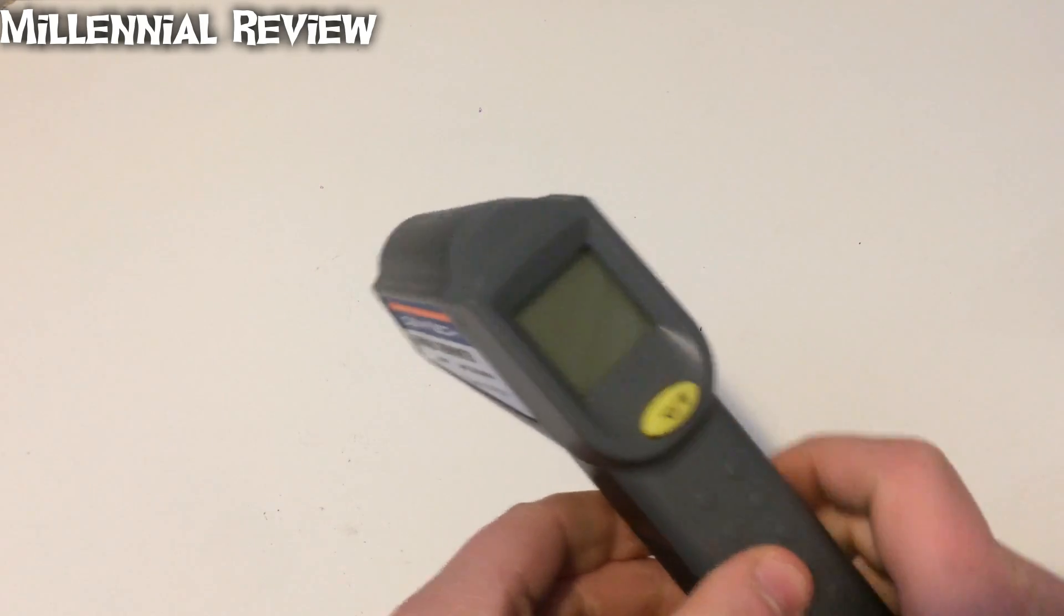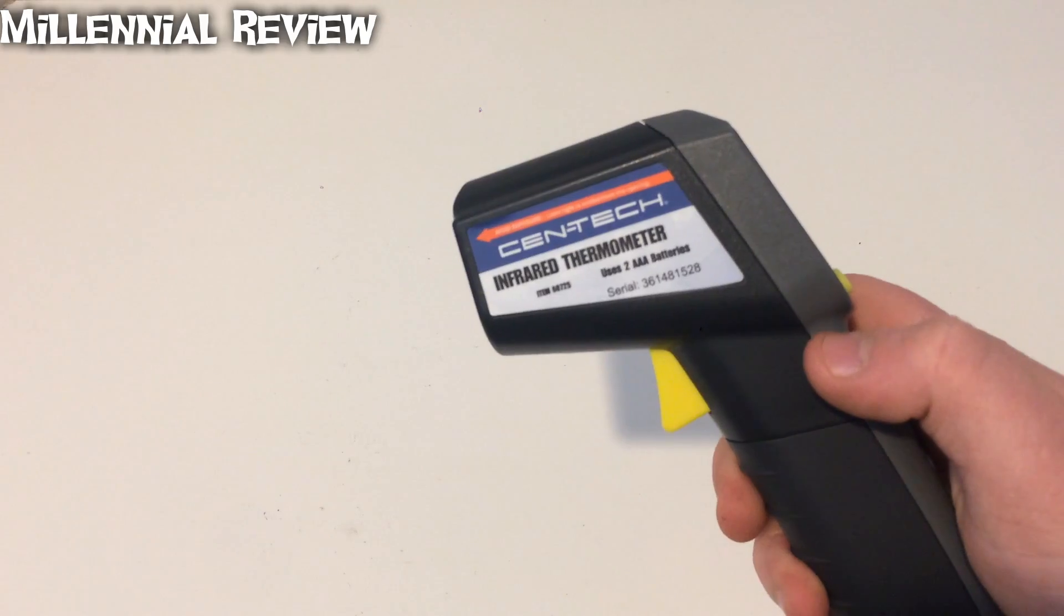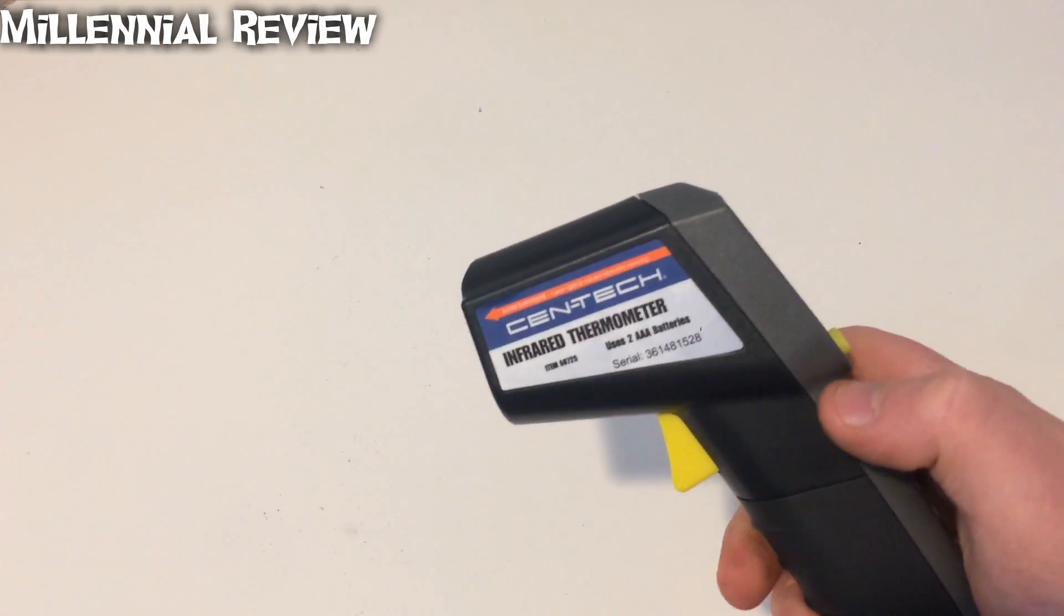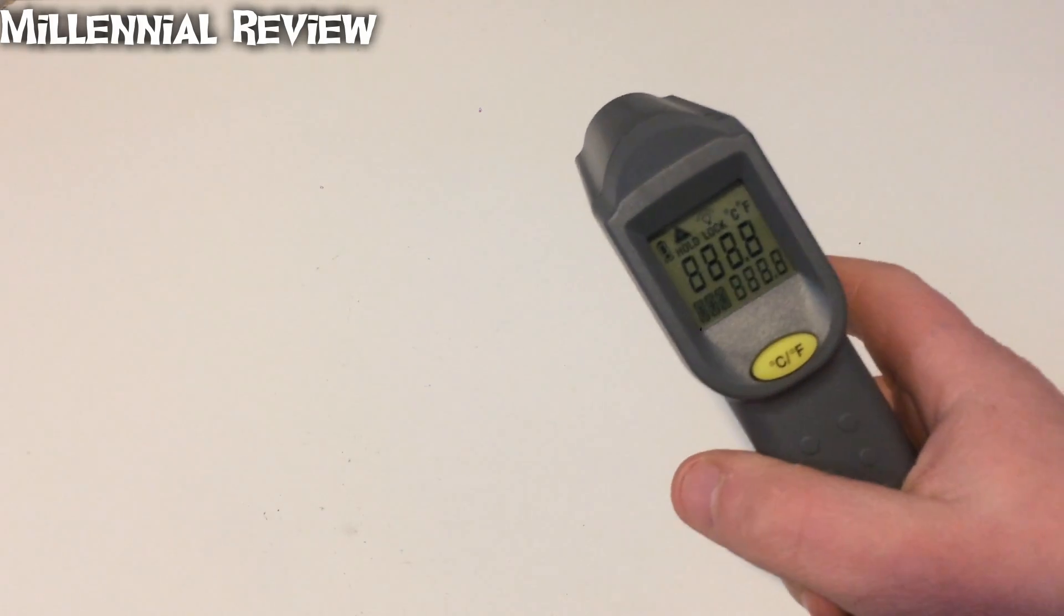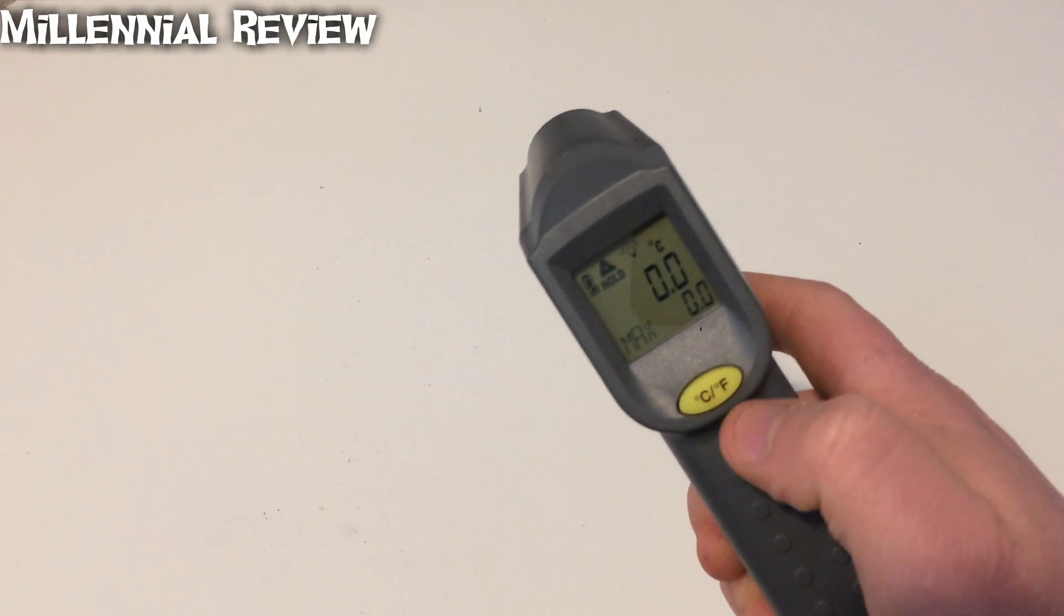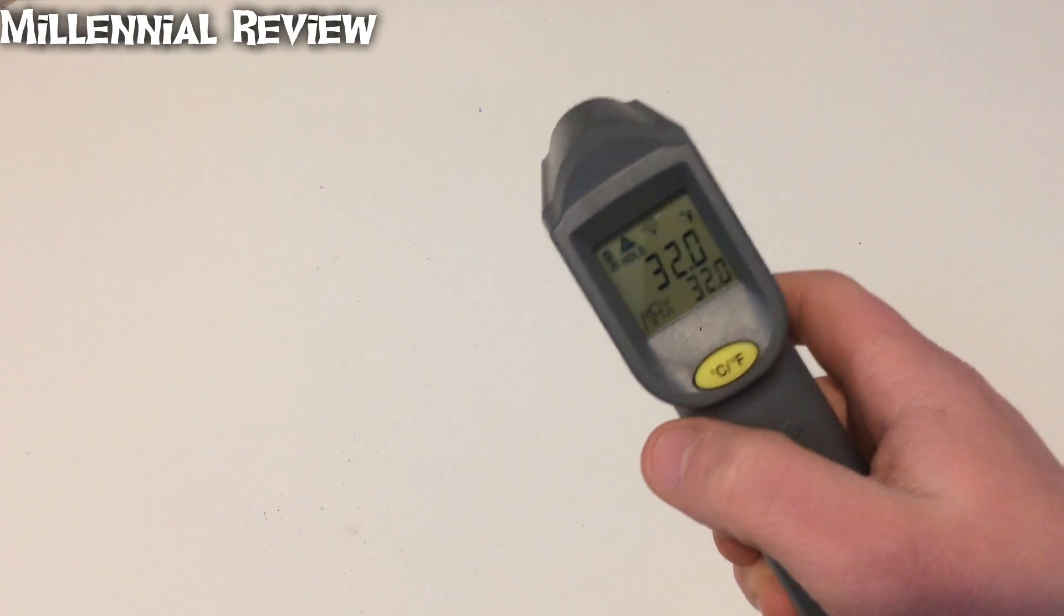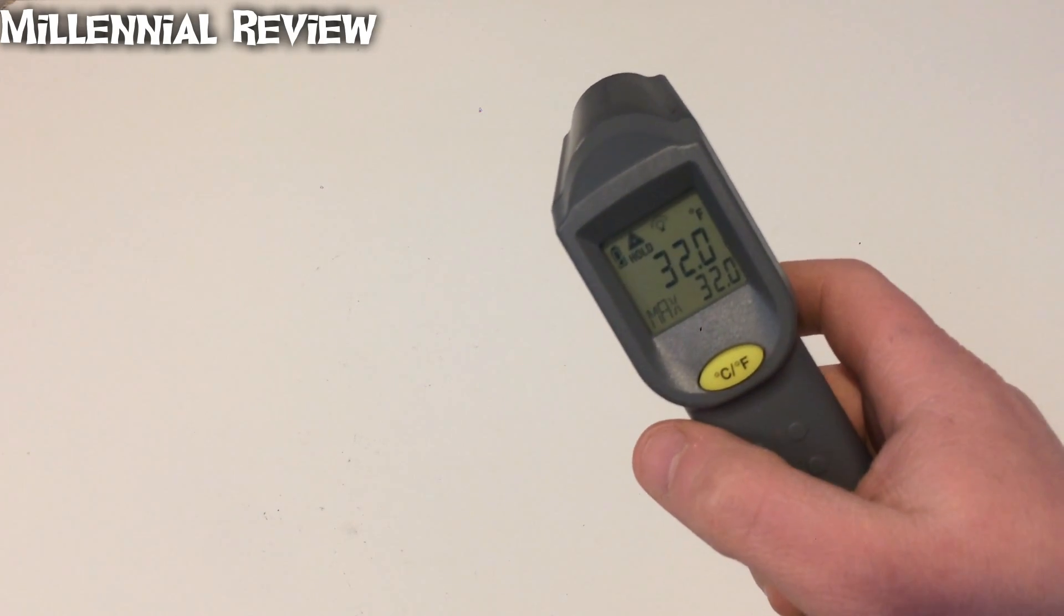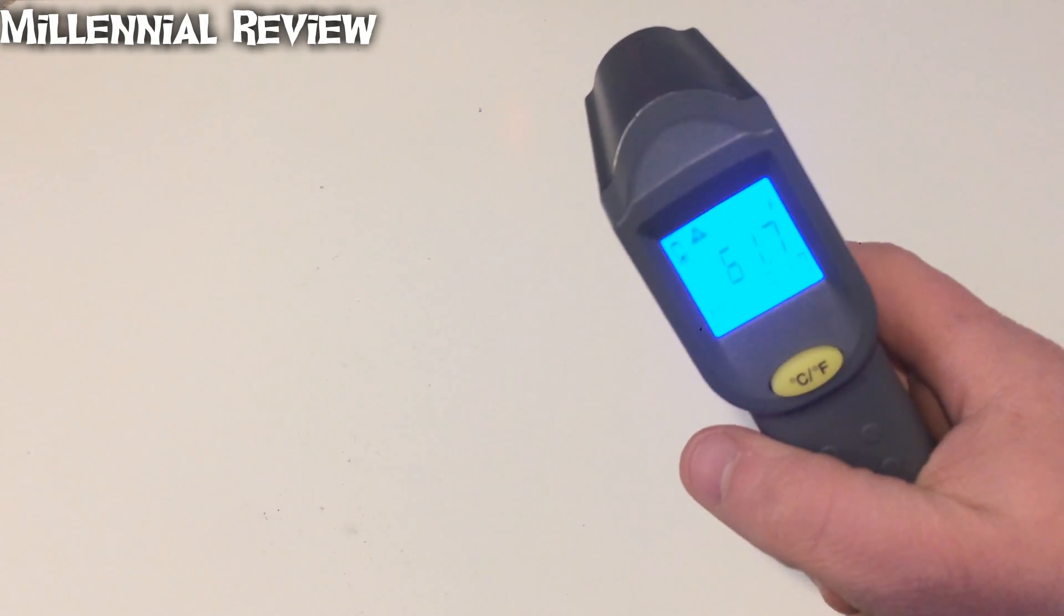So with something like this, you can actually see what temperature something is from quite a ways away and how it works. Got a little trigger here. One click, it'll turn it right on. You can toggle between Fahrenheit and Celsius. And as you'll see, it'll actually show us the max temp that's around. So let's take a look.